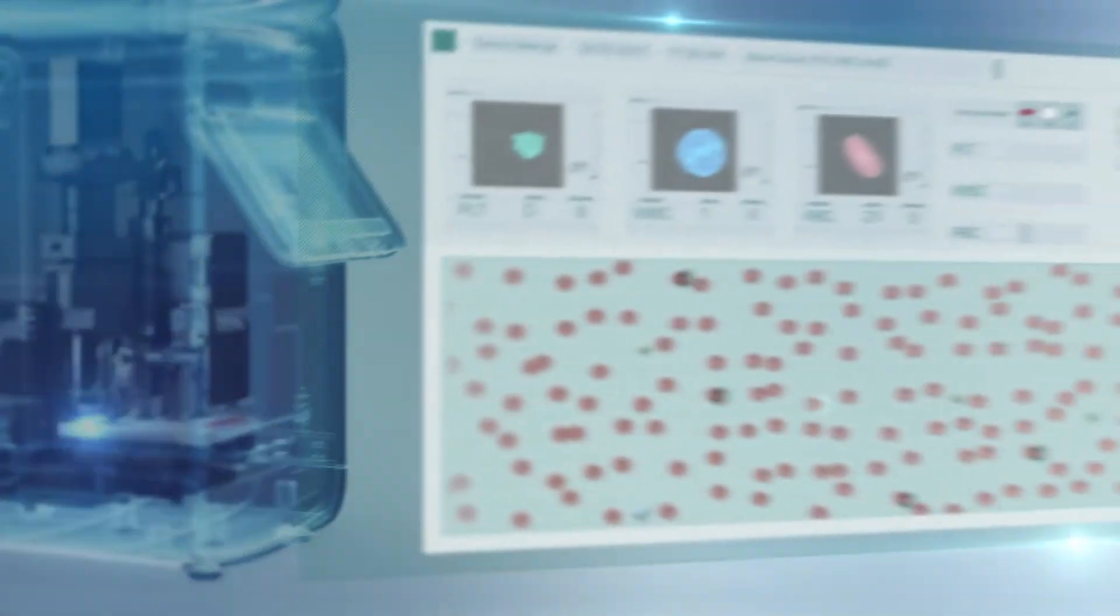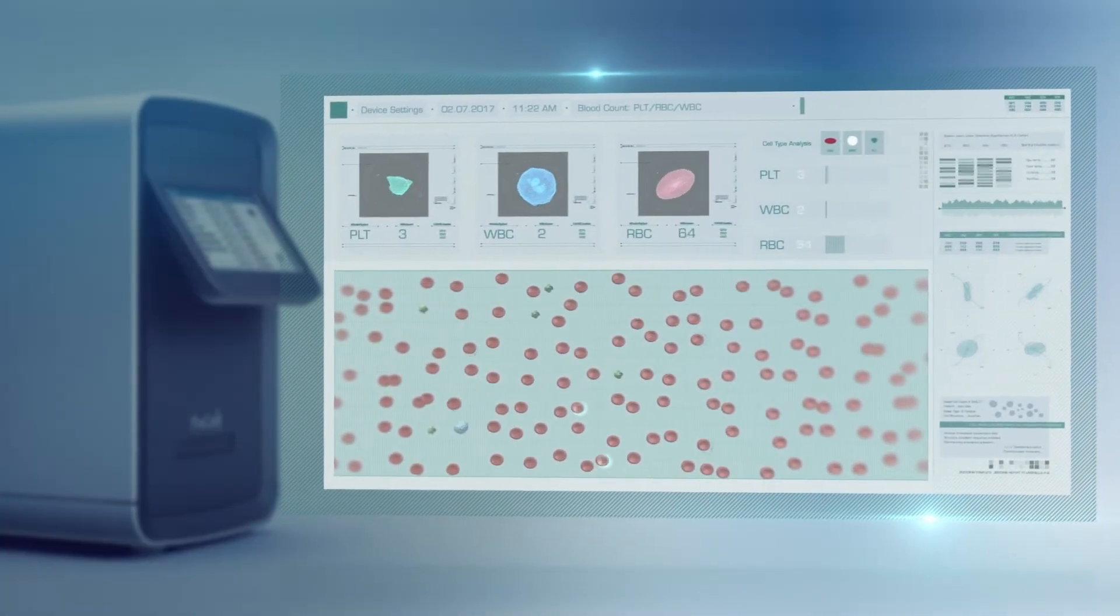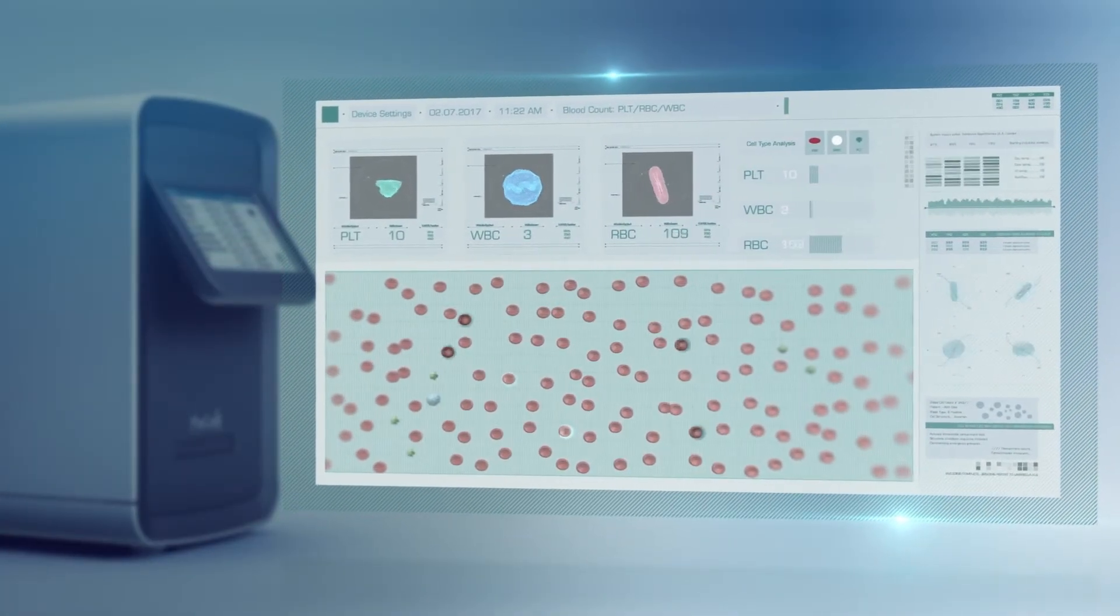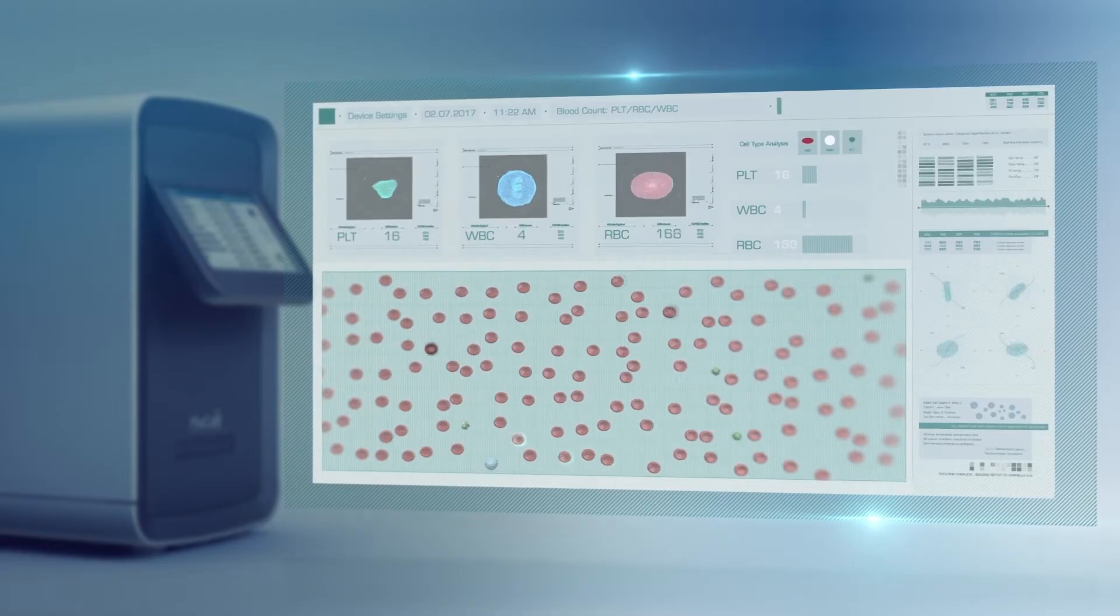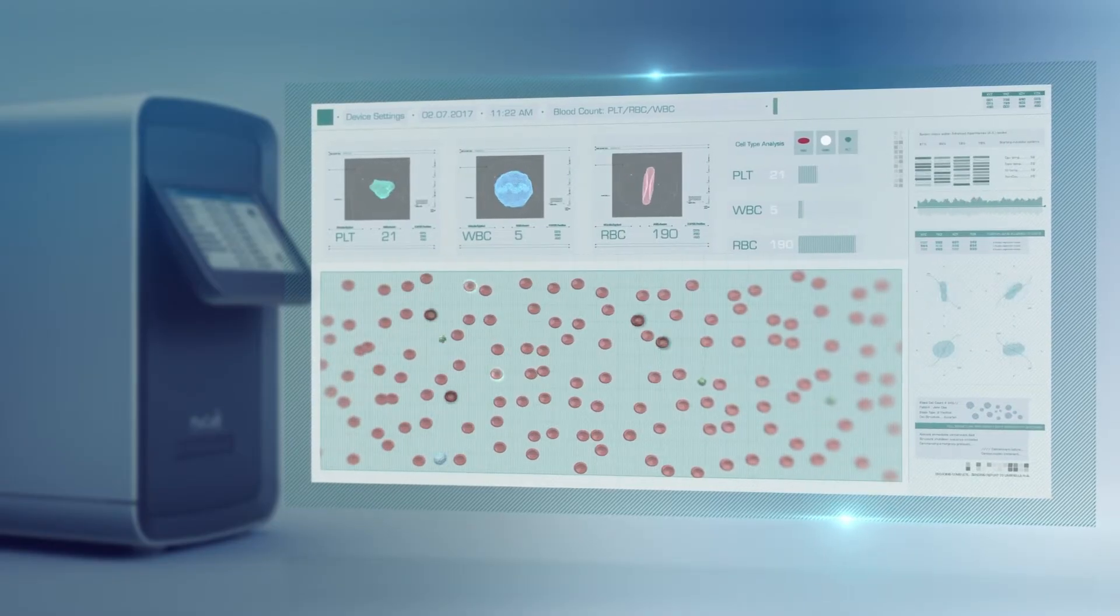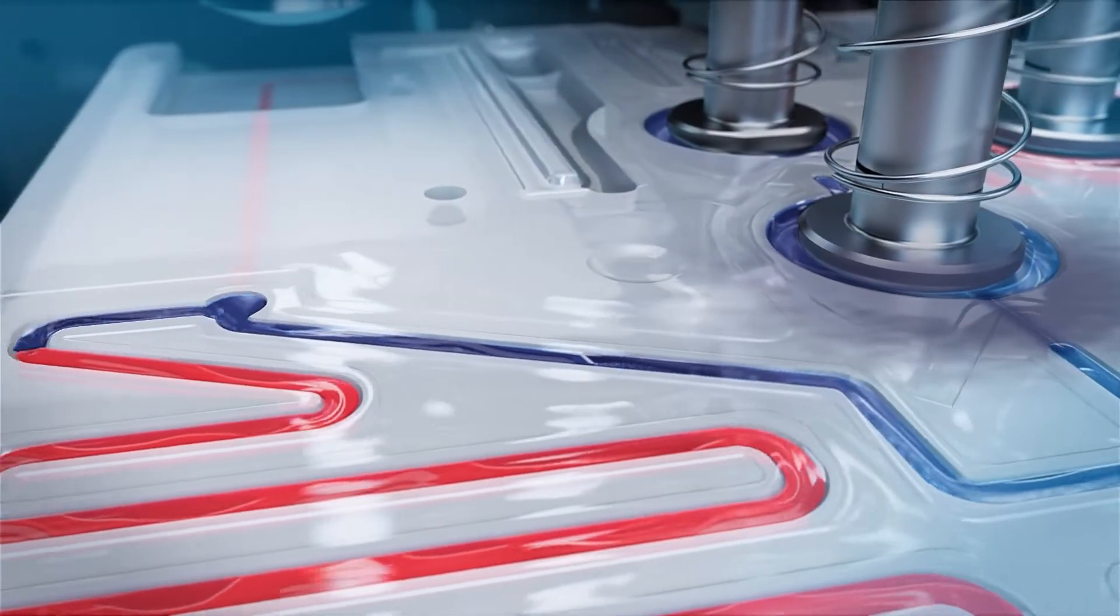Initially, the system counts the red blood cells, white blood cells, and platelets based on the cell shape, size, and color. At a later stage, white blood cells undergo five-part differential classification.